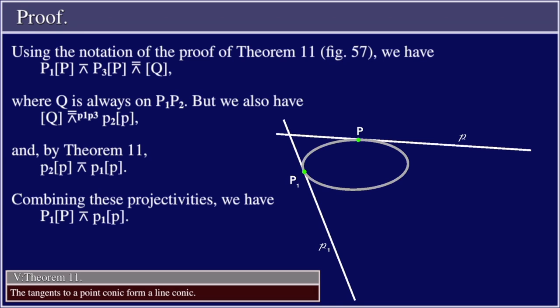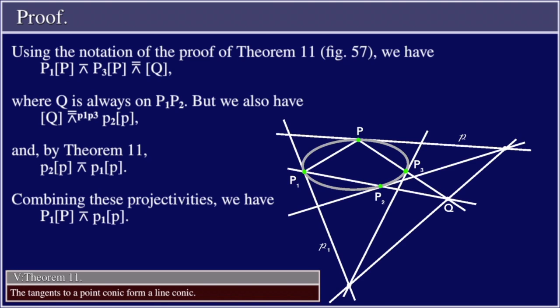Proof: Using the notation of the proof of Theorem 11 (Figure 57), we have P₁ pencil P projective with P₃ pencil P is perspective with pencil Q, where Q is always on P₁P₂. But we also have the pencil Q perspective with center P₁P₃ with P₂ pencil P, and by Theorem 11, P₂ pencil P projective with p₁ pencil p.